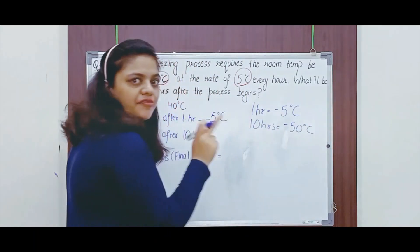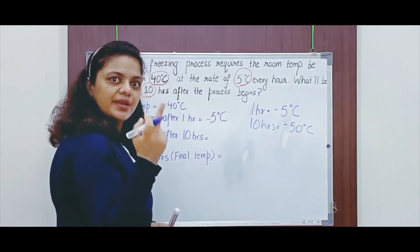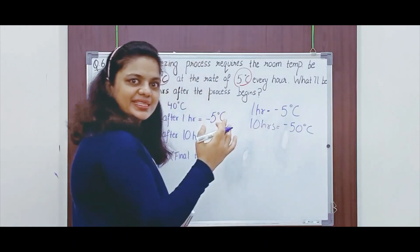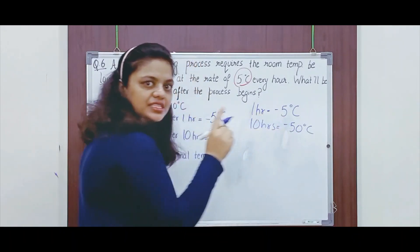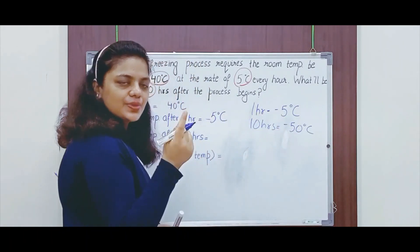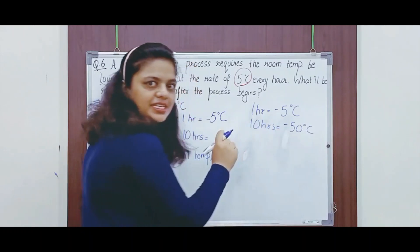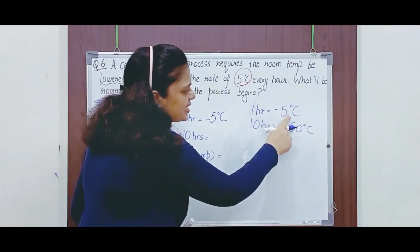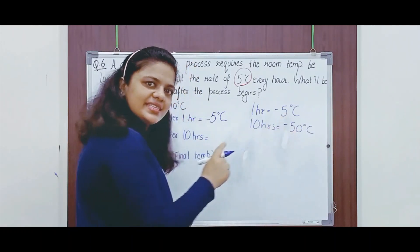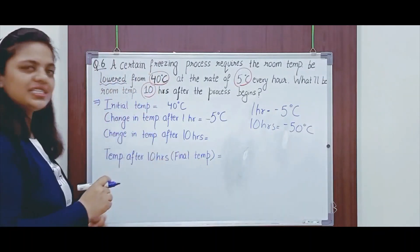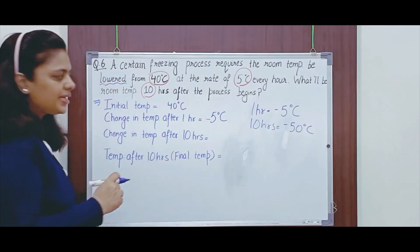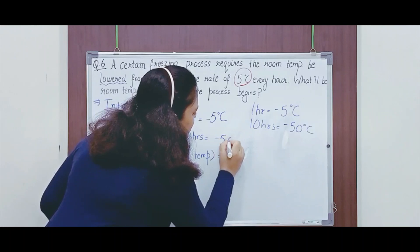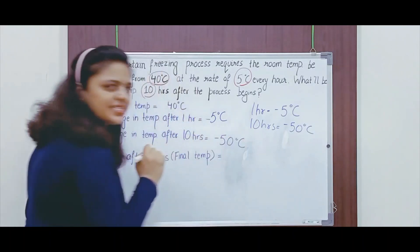1 has become 10 — I have multiplied 1 by 10. To balance both sides, I need to multiply minus 5 by 10 as well, so it is minus 50. That is, 1 into 10 is 10 and minus 5 into 10 is minus 50. So, the change in temperature after 10 hours would be 10 into minus 5, which is minus 50 degrees Celsius.